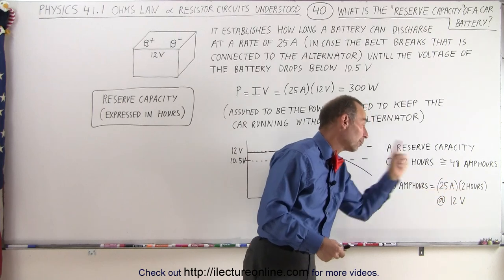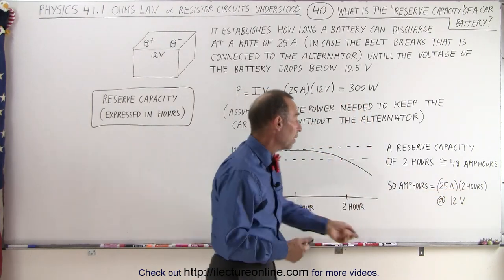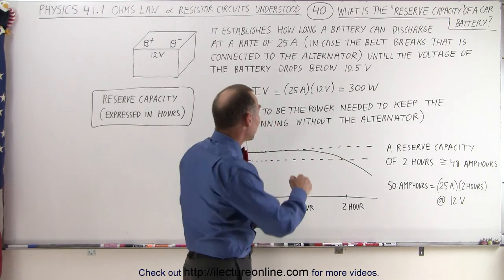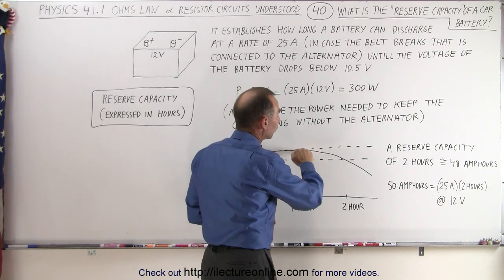25 amps times two hours, you multiply, you get 50 amp hours at 12 volts. The reason why it's a little bit less than 50 amp hours is because the voltage doesn't remain at 12 volts; it begins to diminish.